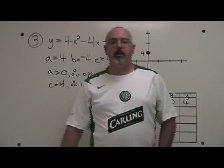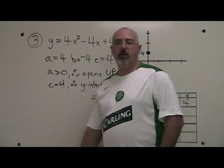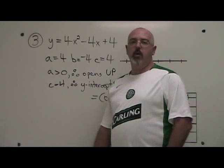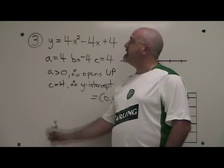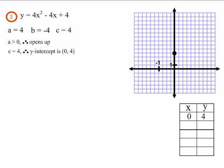This is the a, b, c, the direction of the curve, and the y-intercept for example 3. This is what equation 3 looks like after finding the a, the b, the c, the direction of the parabola, and the y-intercept.